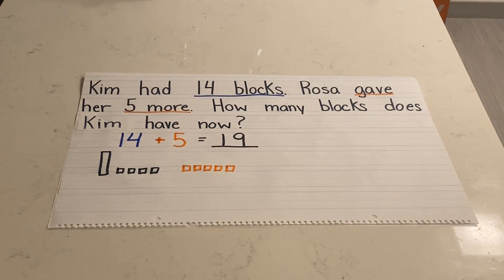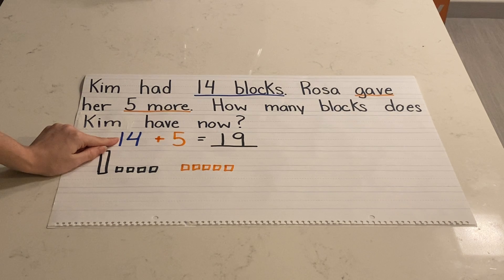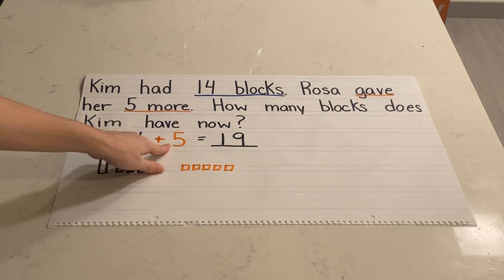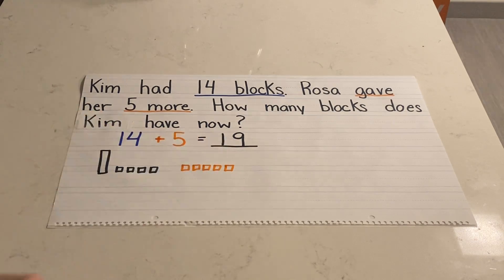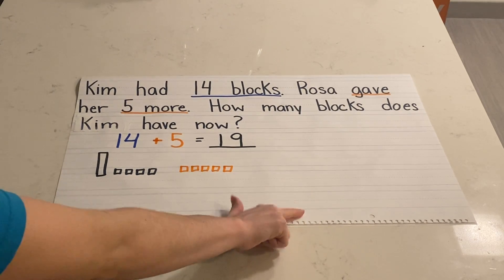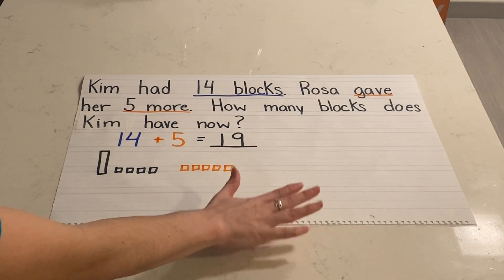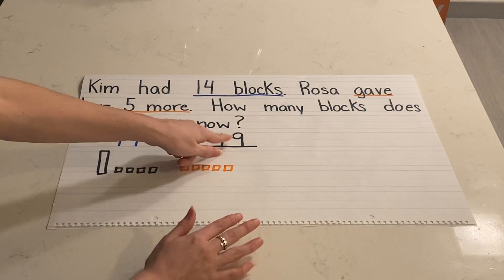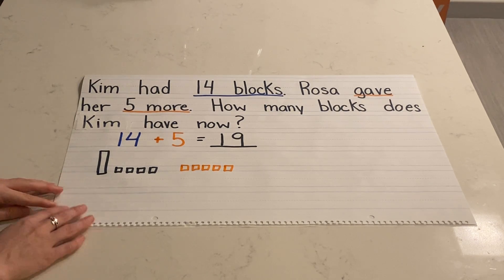But I'm not done yet — I need to double check my work. I've visualized my story problem, I made my number sentence and solved it, but now I need to make sure that I've solved it correctly by checking it. I'm going to check my work by doing a counting-on strategy. I'm going to start at the number 14 and count on five to see if I get the same answer: 19. 14 — counting up — 15, 16, 17, 18, 19. I counted up five and got 19 as my answer, so my work is correct. I have double checked it using a different strategy.